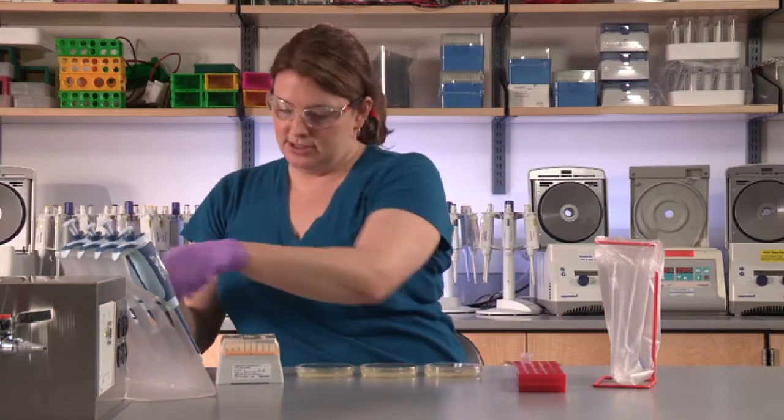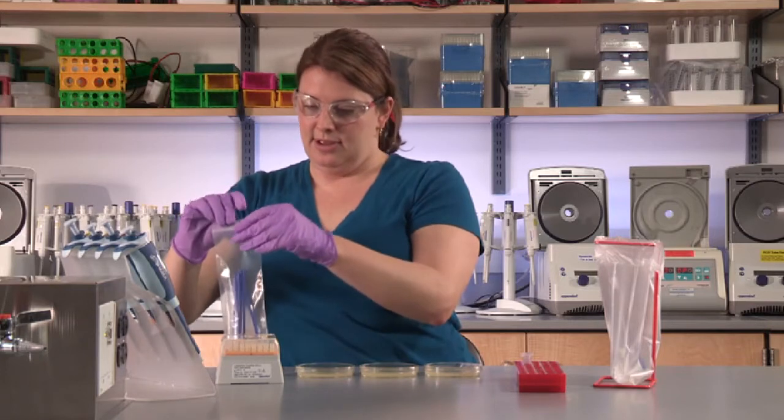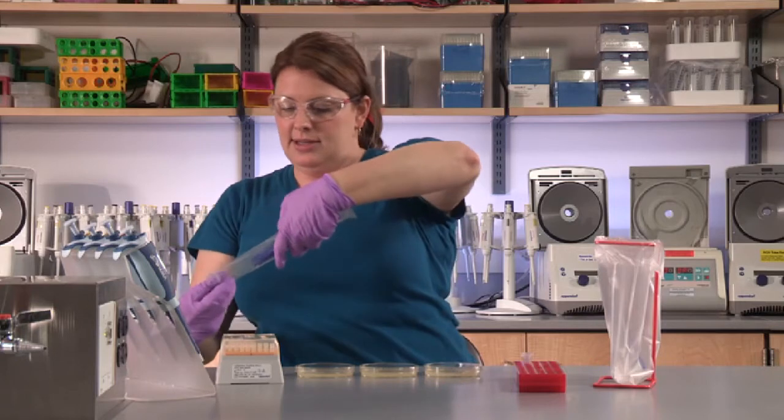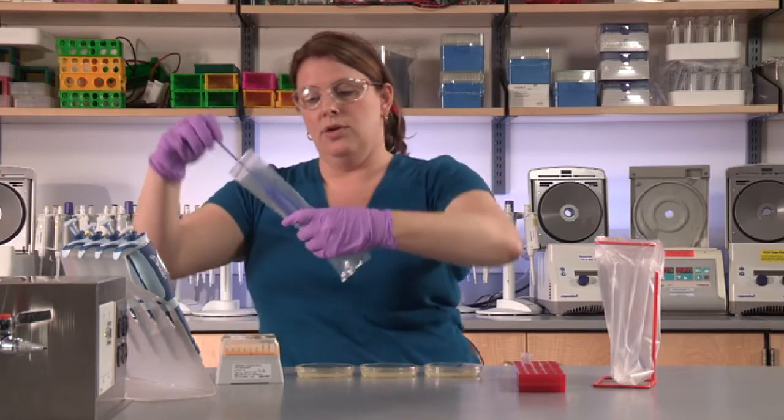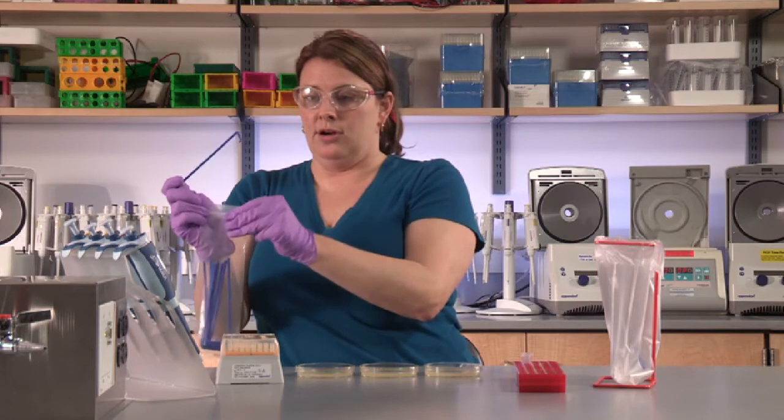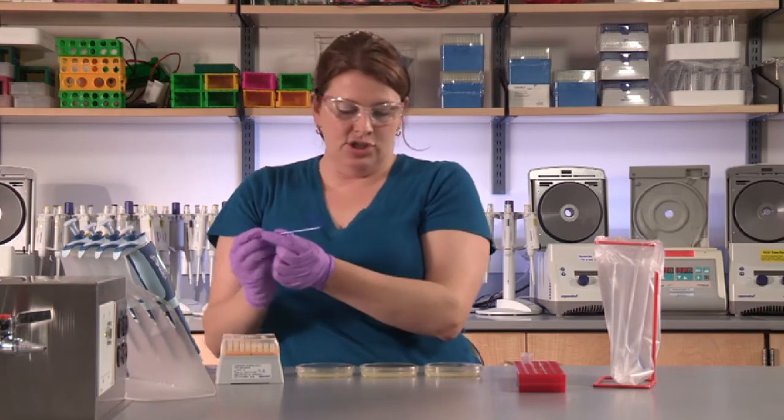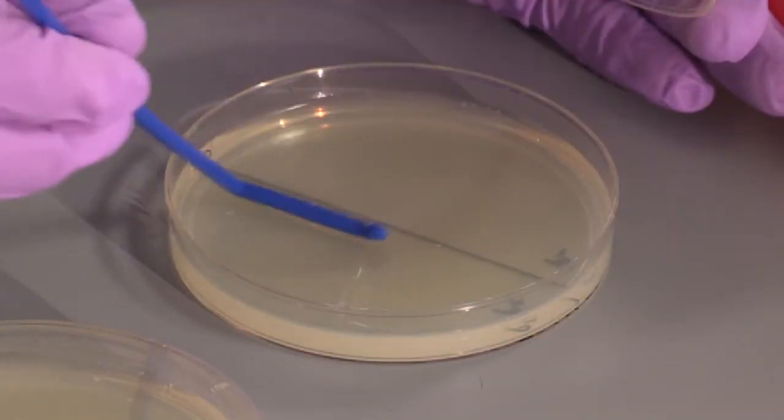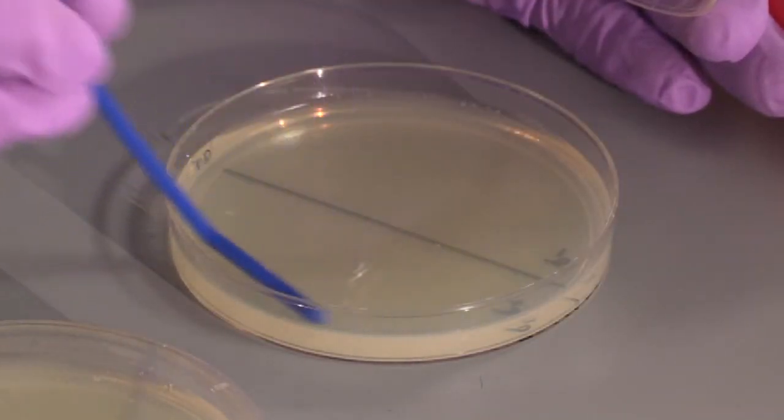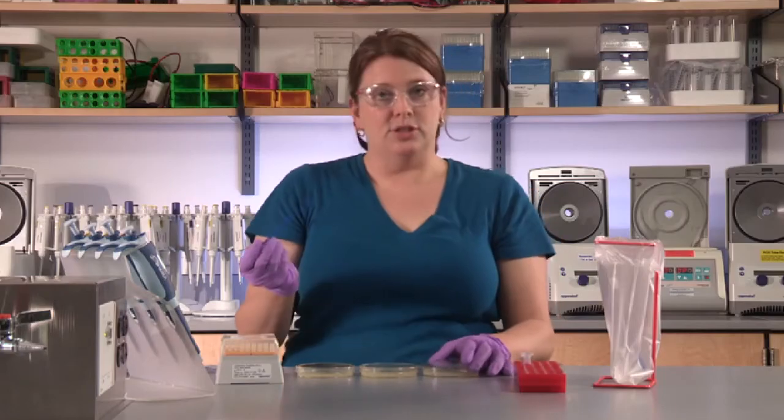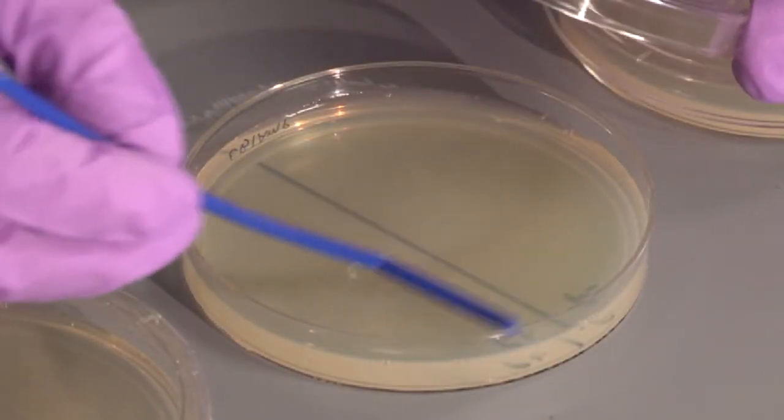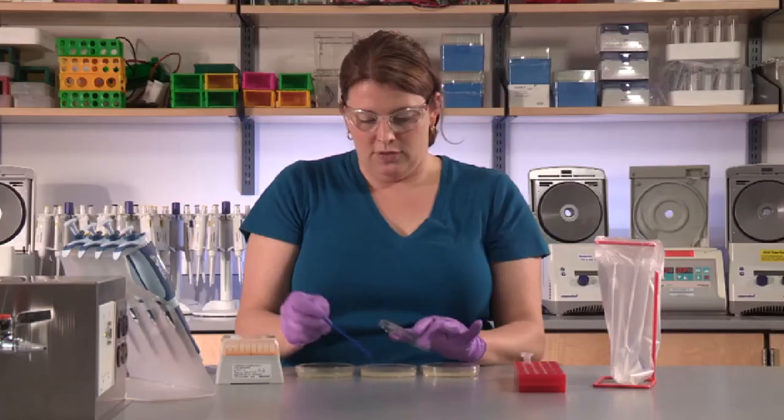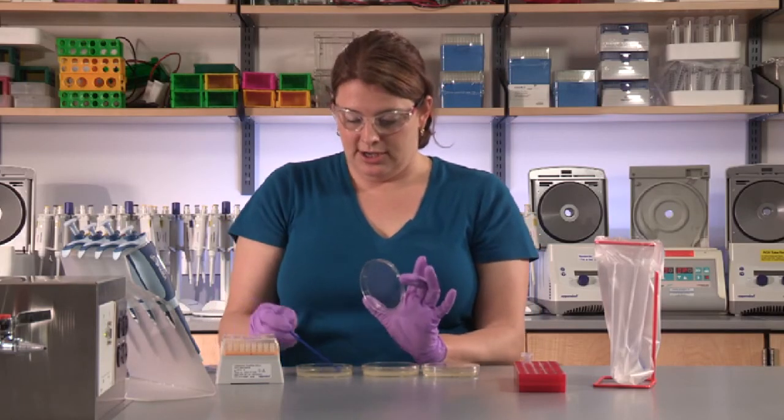Now you're ready to spread these cells. Again, carefully open the packet which contains the spreaders. Remove a fresh one, avoiding contact with your hands and the bench. Go along the plates and spread the P+ that you've just plated. Use a gentle motion back and forth, going over the surface of the plate and trying not to gouge it.